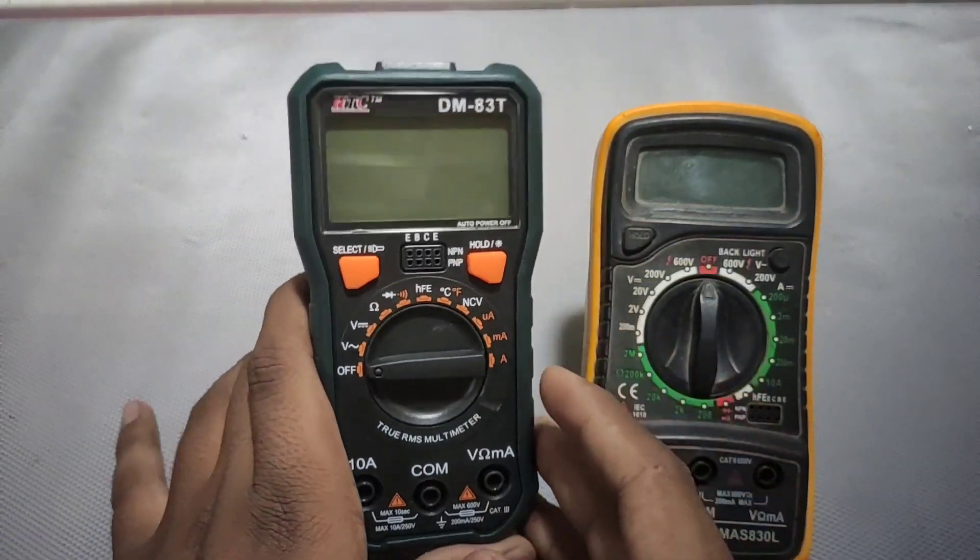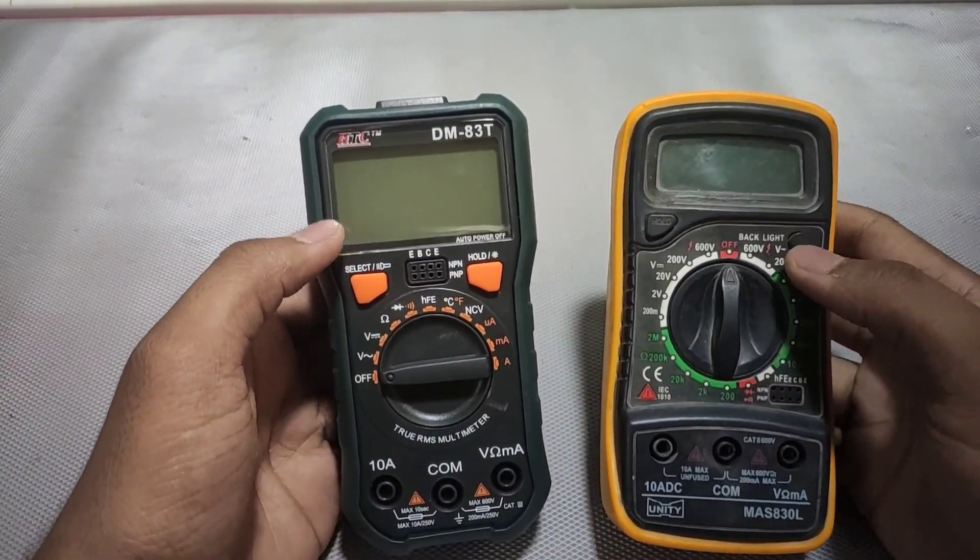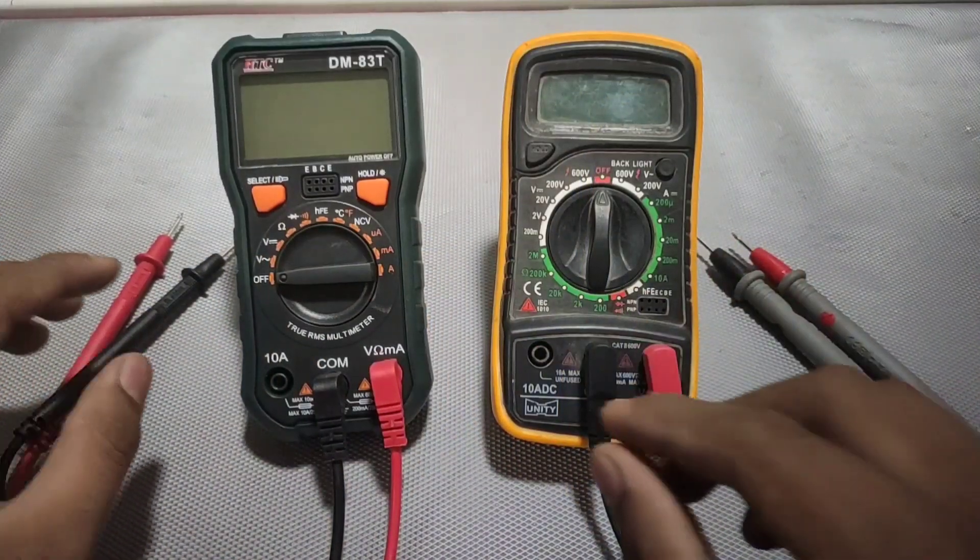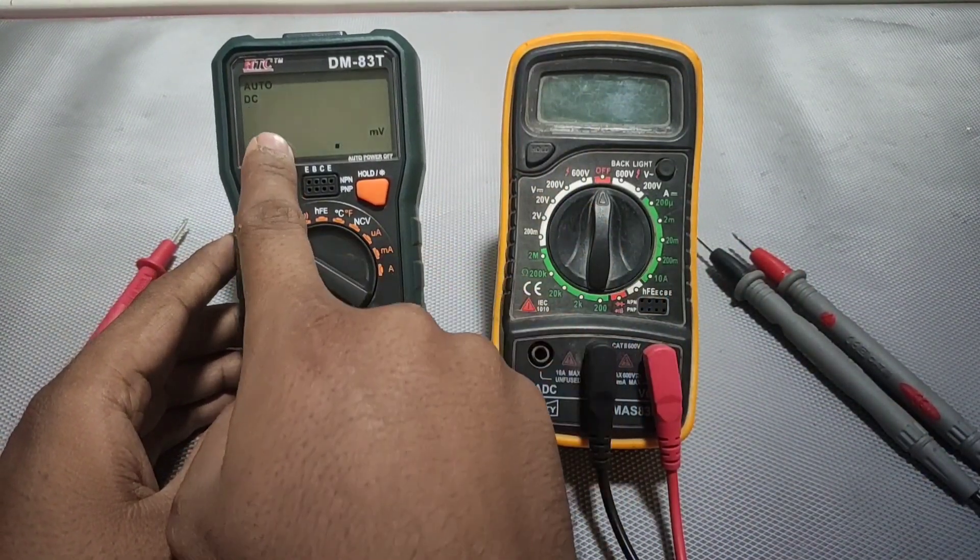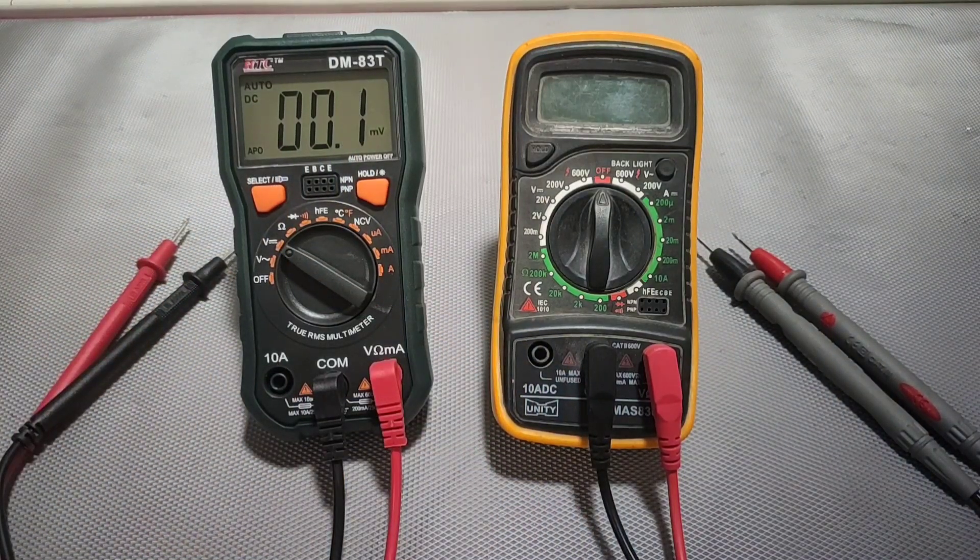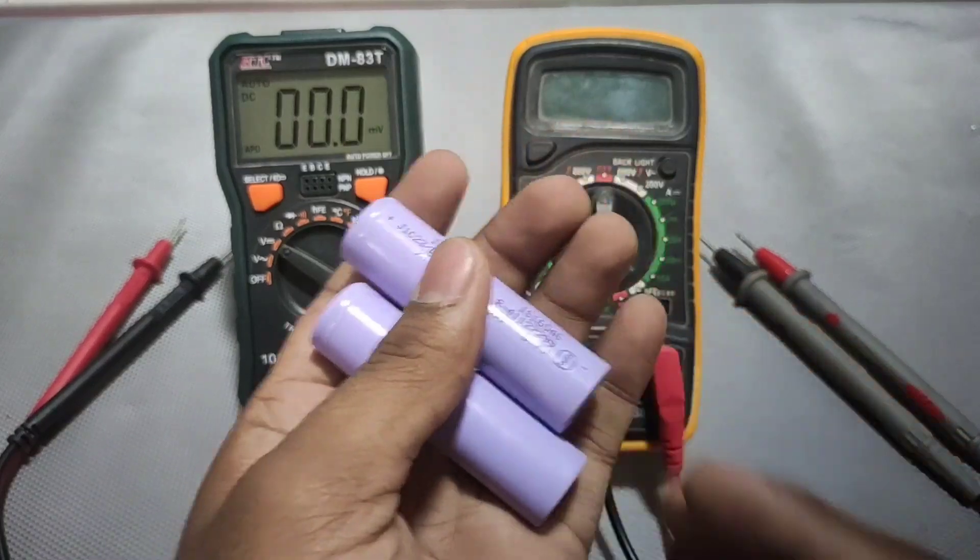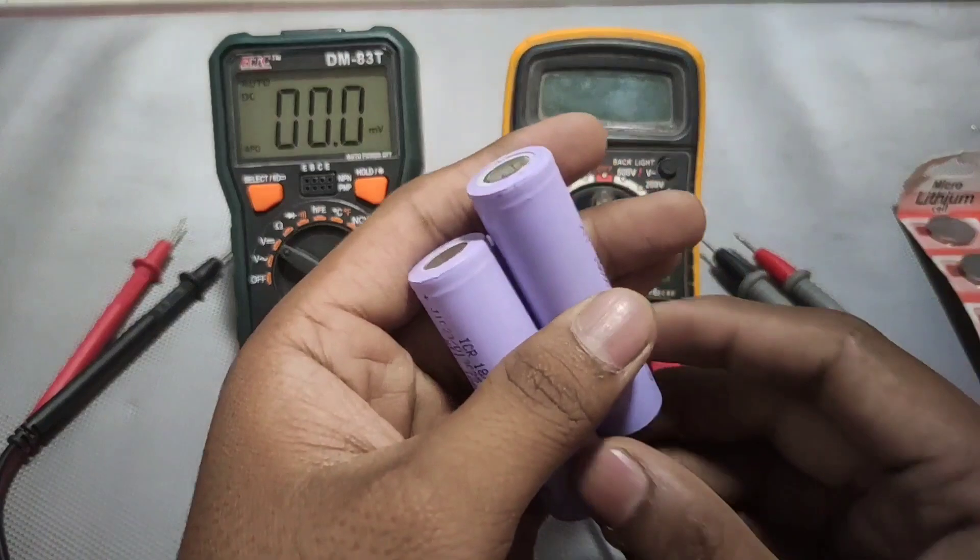Now the weight of HTC multimeter is heavy and Unity multimeter is light. So now we will test DC voltage of batteries. We have set it in DC voltage and it's in auto range. So here are some batteries which we will test.